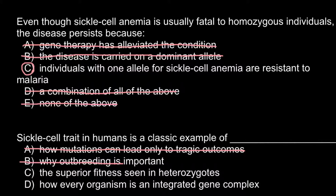We are left with answer C and D. Answer C, the superior fitness seen in heterozygotes, is true. When we have a genotype that is capital S and small s — where small s stands for the recessive allele that causes the disease — the homozygous recessive genotype results in very severe sickle cell anemia. The heterozygous genotype would be superior, but only in central Africa where malaria is present, as malaria is a deadly disease.